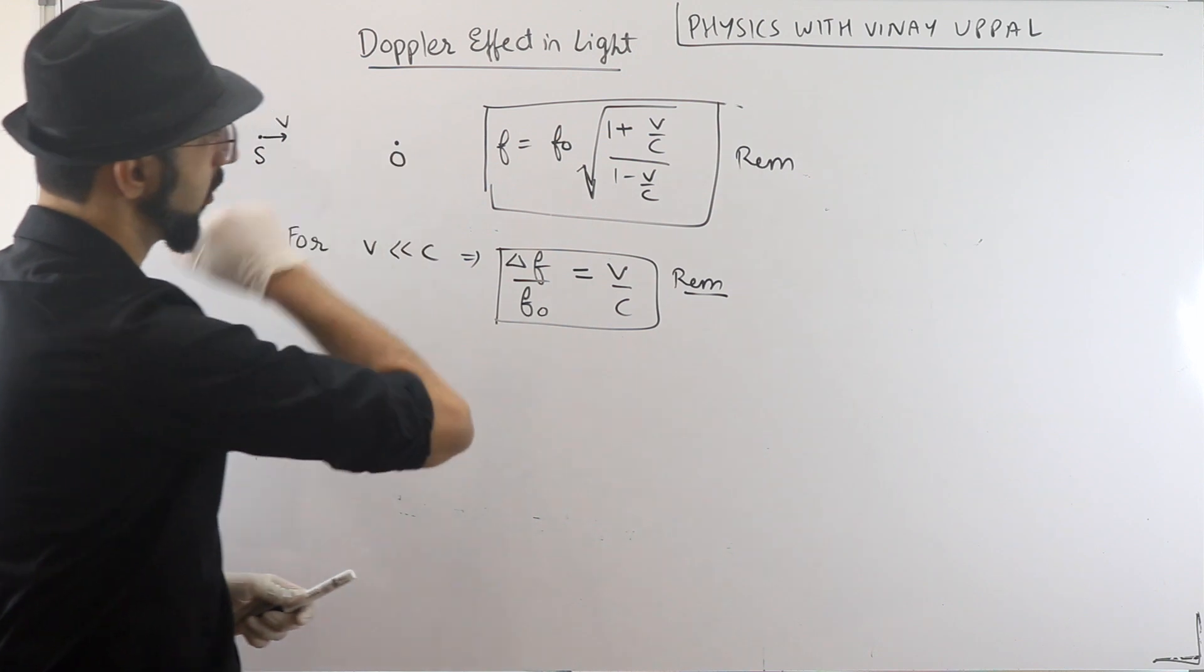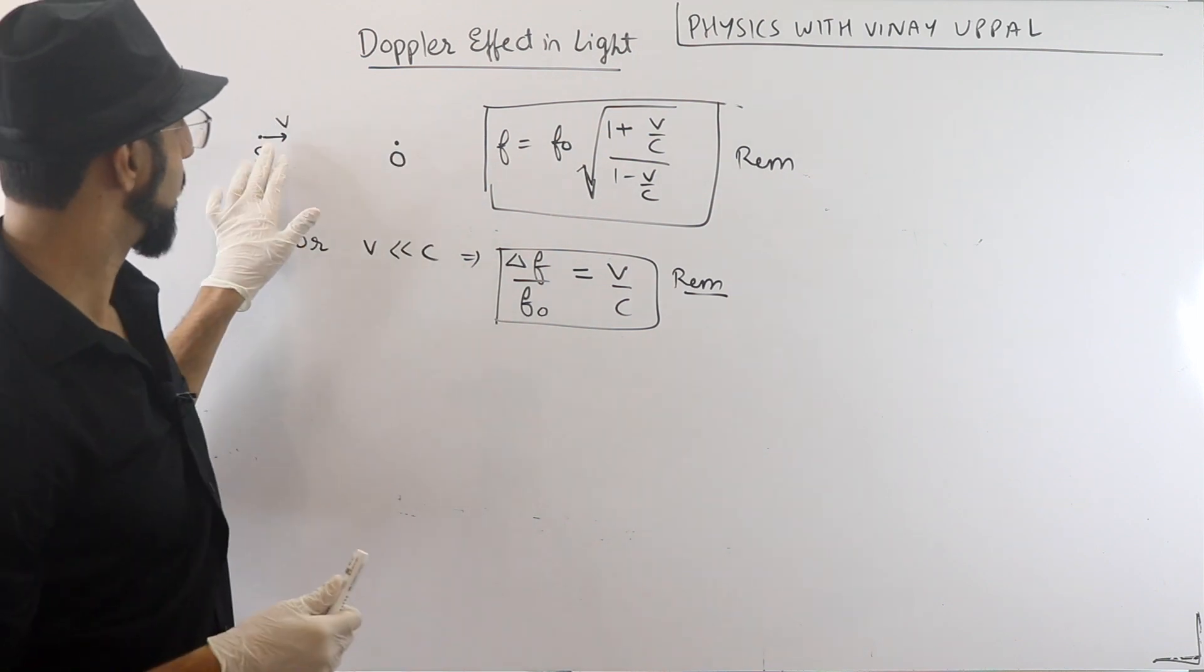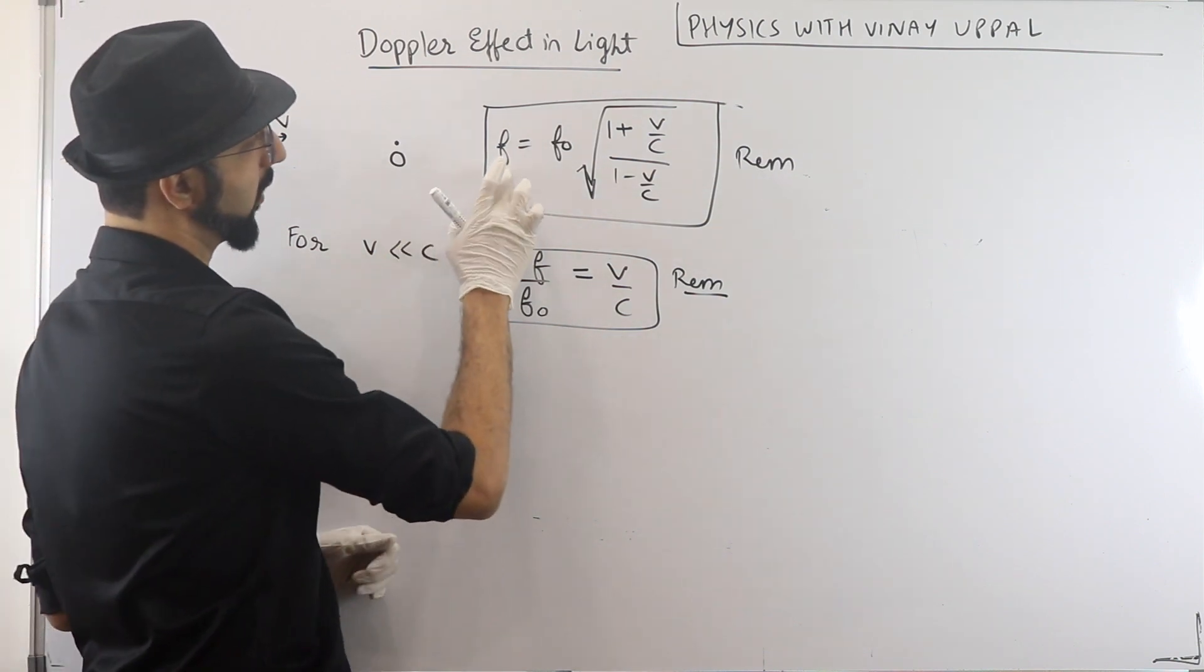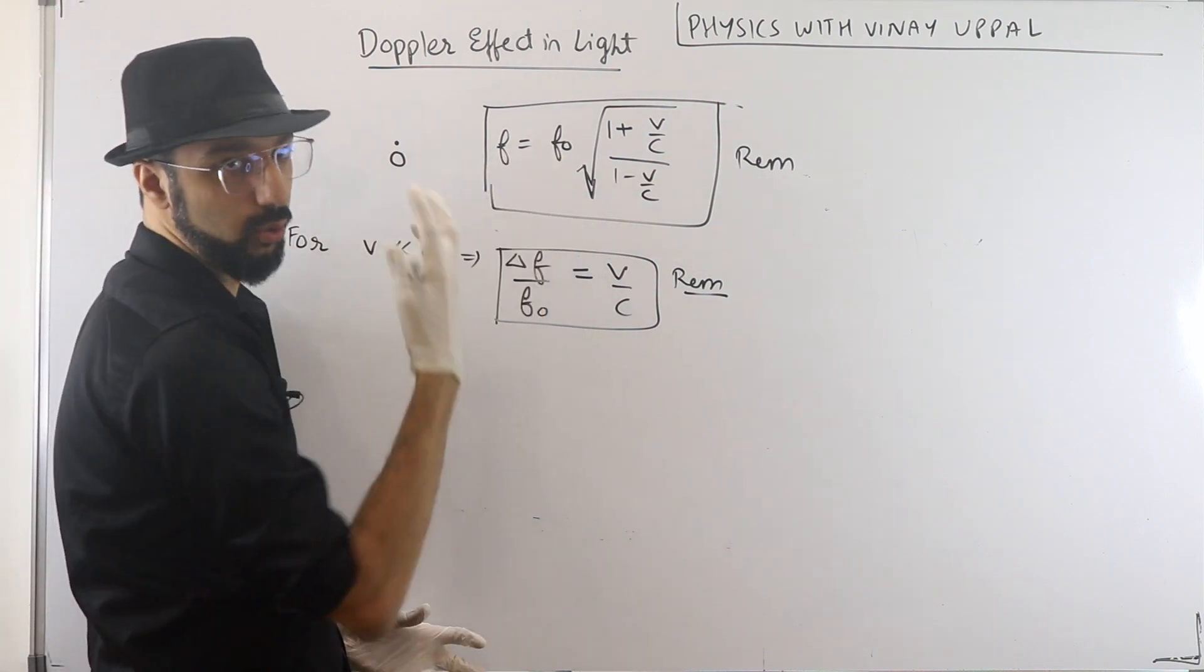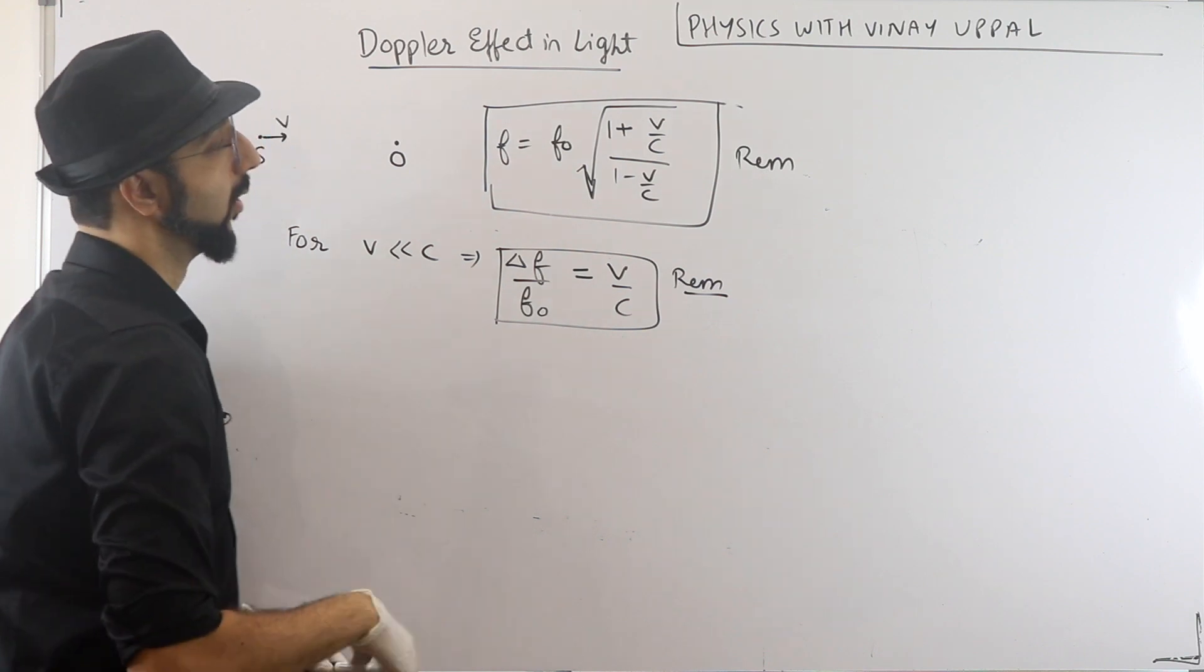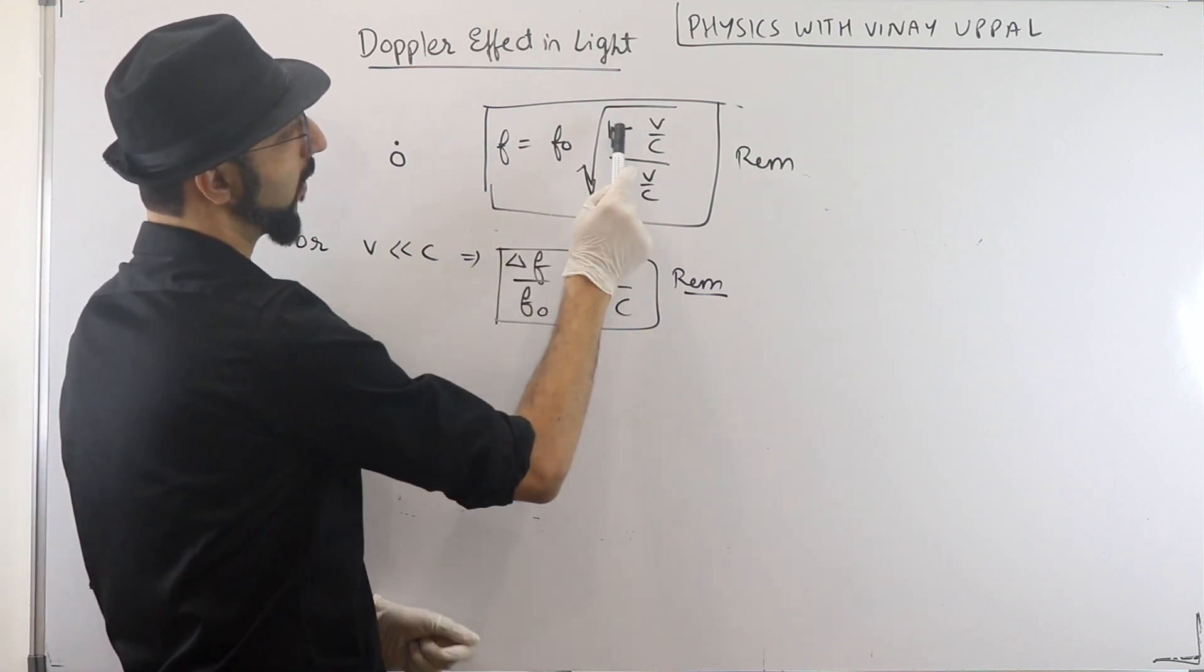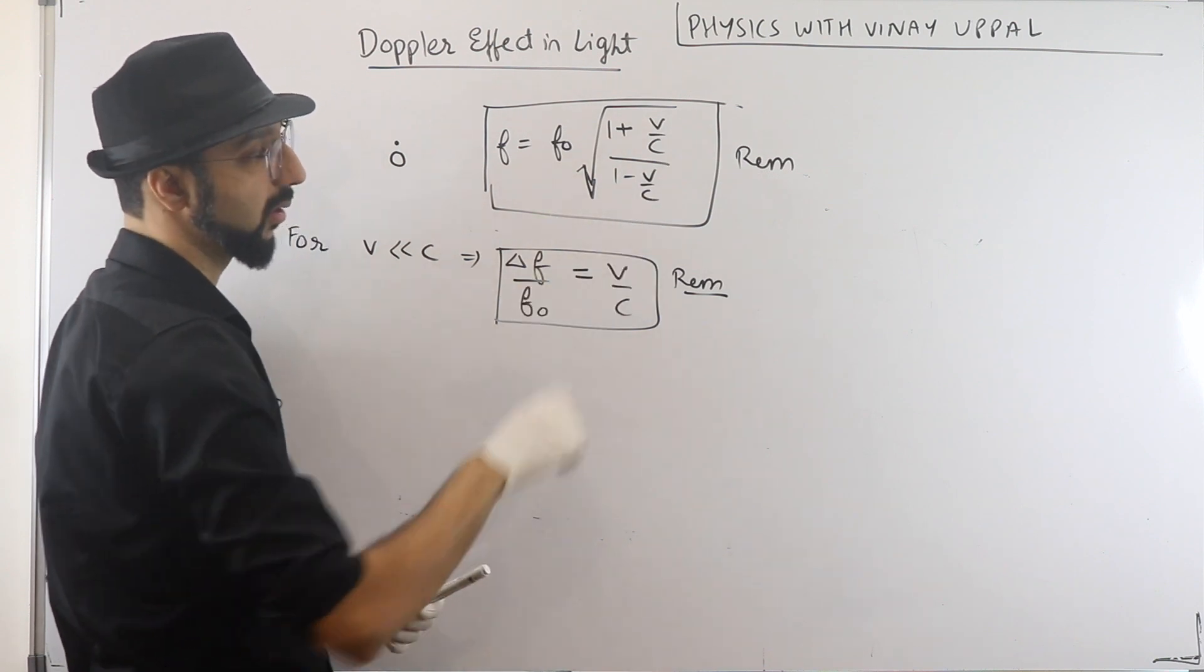So first let's fly a Doppler effect in light. Take a look at Doppler effect in light. I have a source that is travelling with velocity v towards an observer. The frequency observed is equal to f0, where f0 is the frequency of the source when the source is stationary. The frequency observed comes out to be this formula: f0 into root of 1 plus v by c divided by 1 minus v by c.